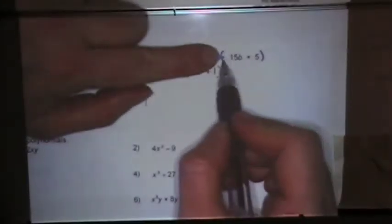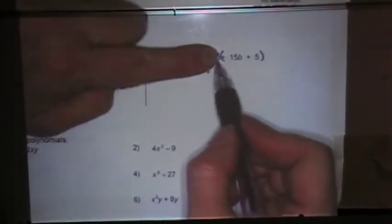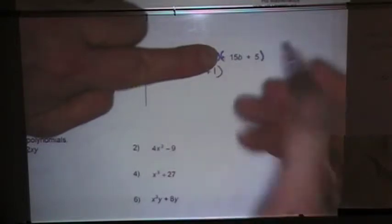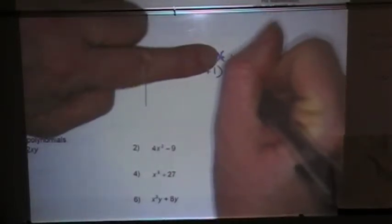Now, both of these have a plus. So I'm looking at my second set of parentheses. Both of them are positive, so I'm going to factor out a positive, and they have a 5 in common.